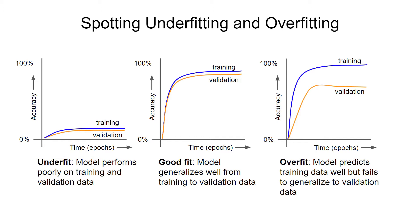Overfitting happens when the model picks up the nuances in the training data without generalizing to the overall trends in the data. You can spot this by looking at the validation set accuracy. If it's much lower than the accuracy from the training data, it usually means the model has been overfit to the training data.